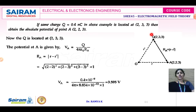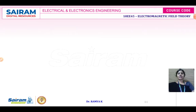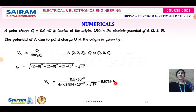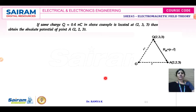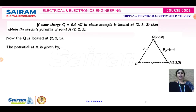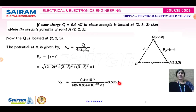Comparing the two results: when the point charge is placed at the origin, the potential at A is 0.8719 volts. When the same charge is located at (2, 3, 3), the potential at A is 3.595 volts — a significantly higher value due to the smaller distance between the charge and the point.